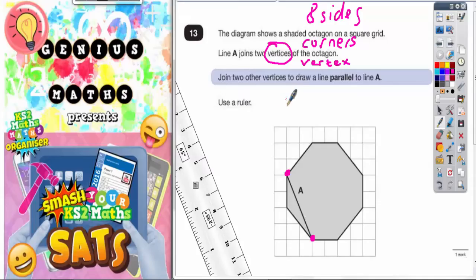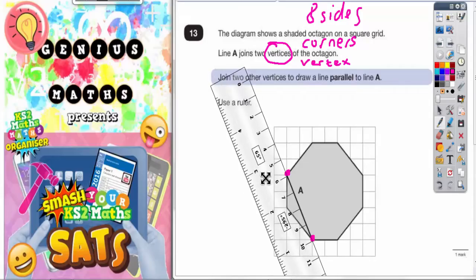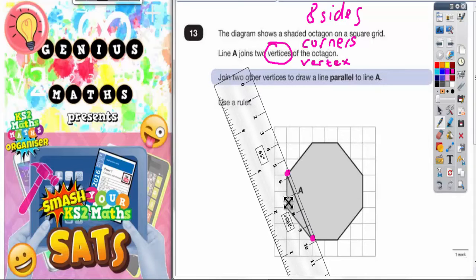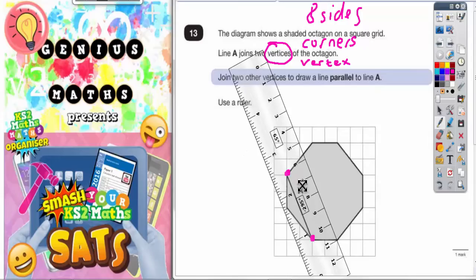Join two other vertices to draw a line parallel to line A. All you've got to do for this one to get a parallel line is put your ruler on line A and then simply slide the ruler across and keep sliding it until two corners are joined. We're already past this corner here and it's not joining another corner so that doesn't work.